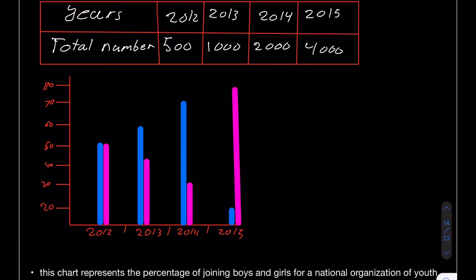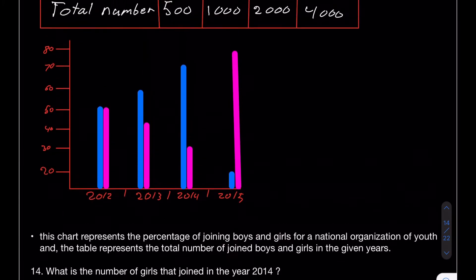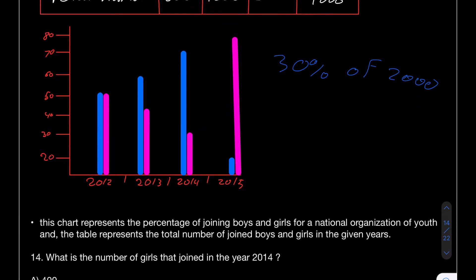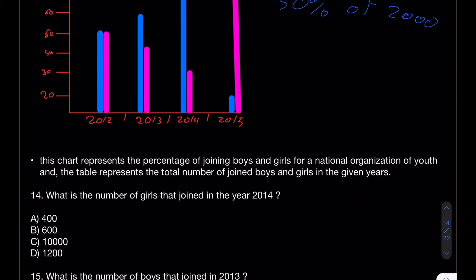Question 14 asks: what is the number of girls that joined in 2014? In 2014 you have 2000 people, and girls were 30% of that. So it's 30% of 2000. What is 10% of 2000? That is 200. 200 multiplied by 3 is 600, which is choice B.